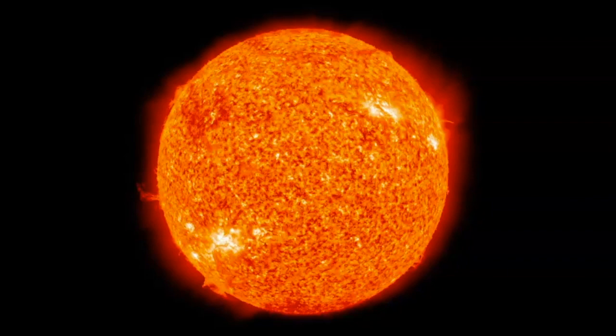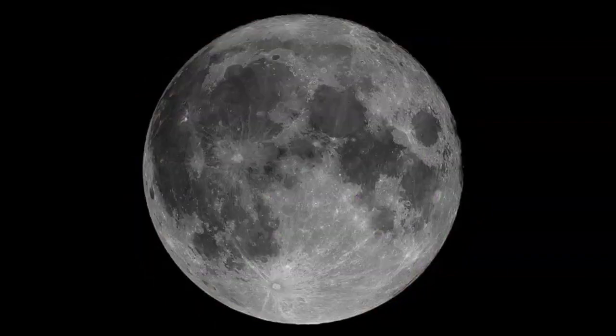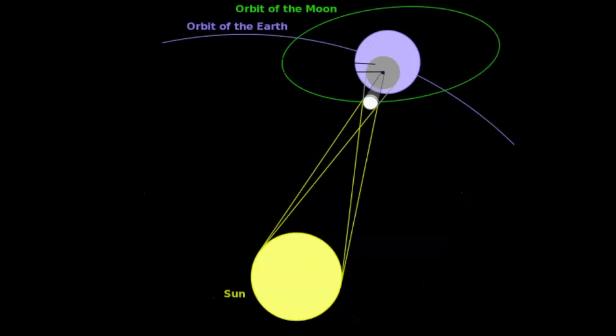So we have our sun, and what happens is the moon covers the sun. Here's another picture of how this arrangement works with the sun, the moon, and the Earth. And you can see that the shadow of the moon is just narrower, so it limits where you can see a solar eclipse.